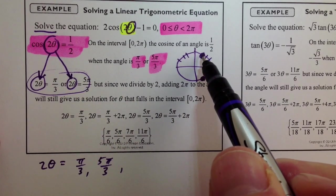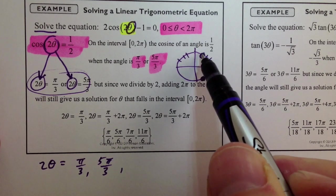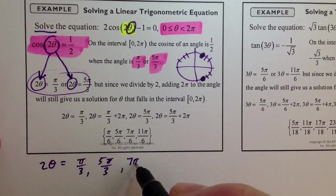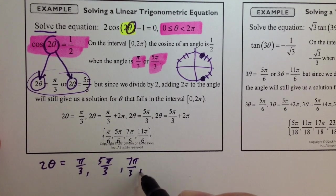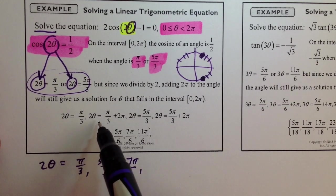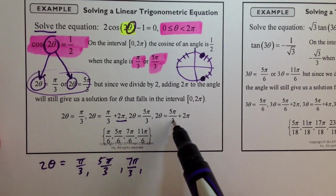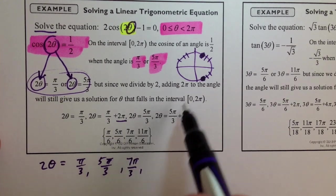So, if you look at the pi over 3, 5 pi over 3, 7 pi over 3 would be 7 pi over 3. So, notice that they're adding 2 pi, adding 2 pi to these angles in here. Well,